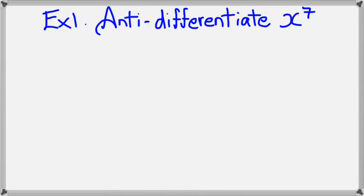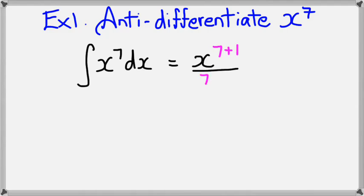So here's an example, anti-differentiate x to the power of 7. Now anti-differentiate is pretty much just another word for integrate. So we have to write it with the integral sign and the dx sign. And this would mean we'll add 1 to the 7, so it'll become 7 plus 1, divided by the new power, which is 7 plus 1 as it is.